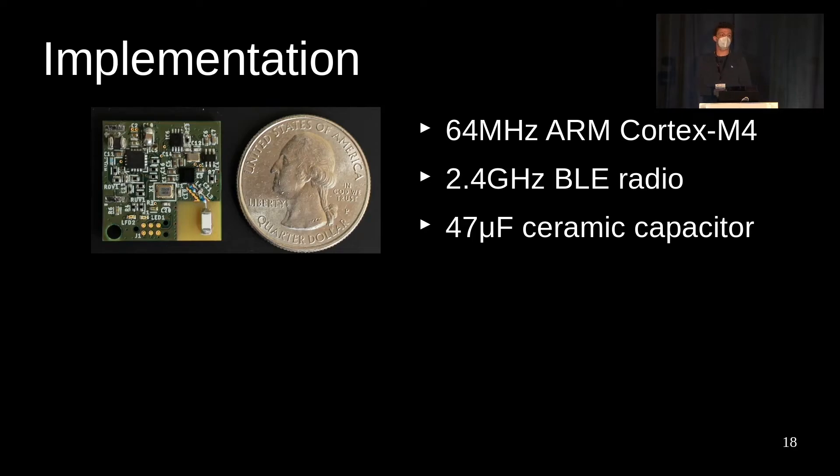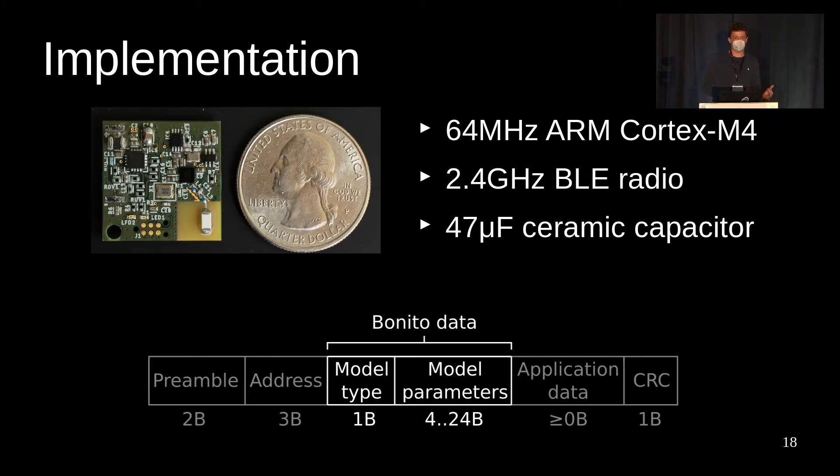To validate this concept, we designed a low power battery-free node based on the NRF52 microcontroller. It comes with a Cortex M4 CPU and a BLE radio. A boost converter charges a 47 microfarad ceramic capacitor from a connected solar panel or a kinetic harvester. At every encounter, devices exchange a packet that contains the type of distribution as well as the current model parameters.